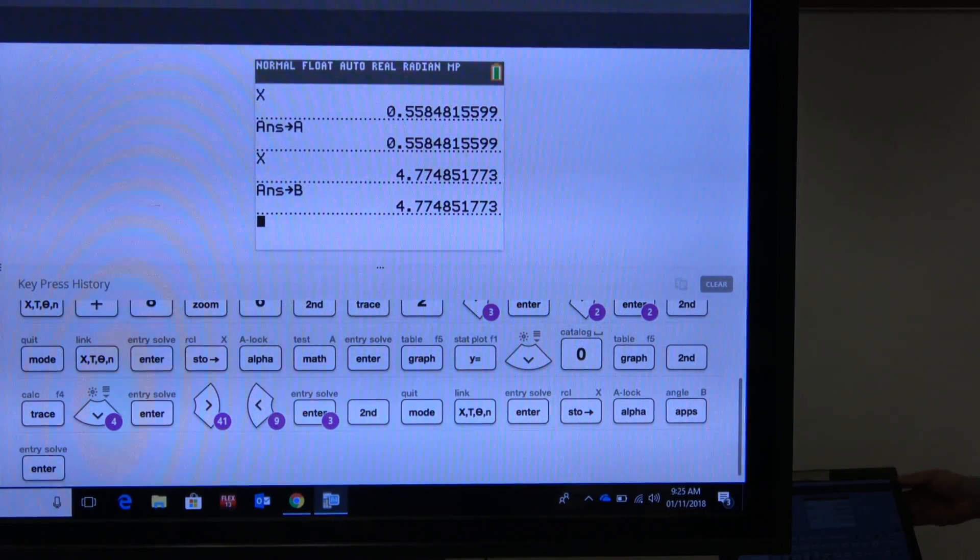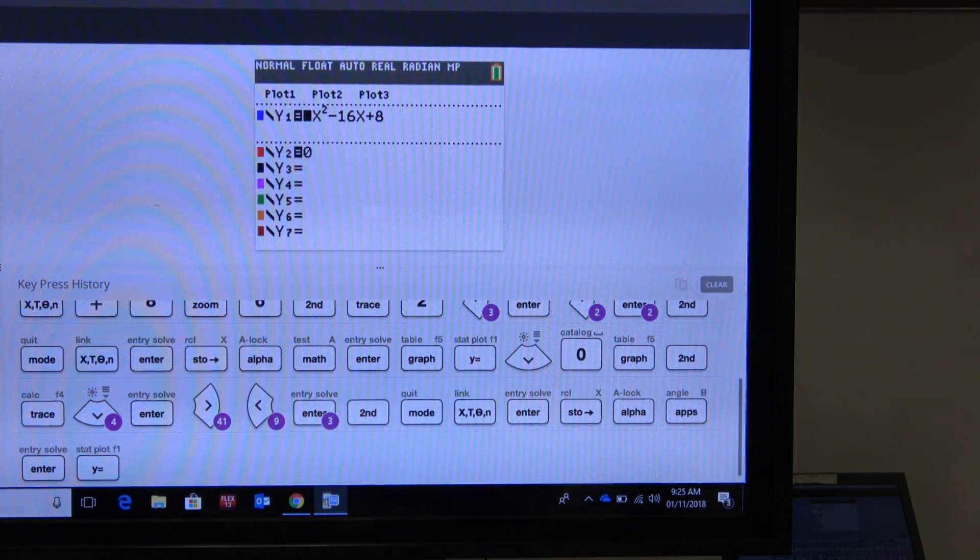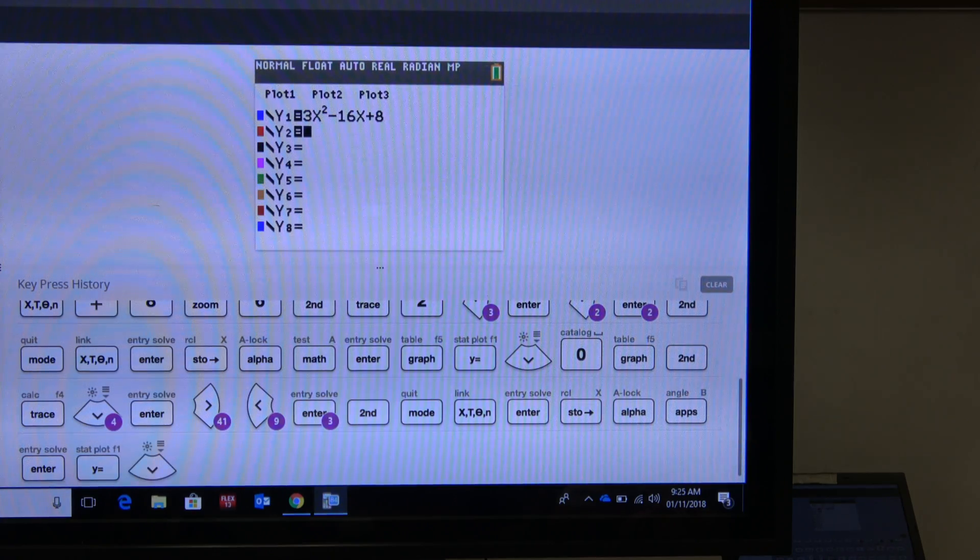So let's go to our y equals and let's put in the position function. I don't really need the y2 anymore, so let's put it in for y2.